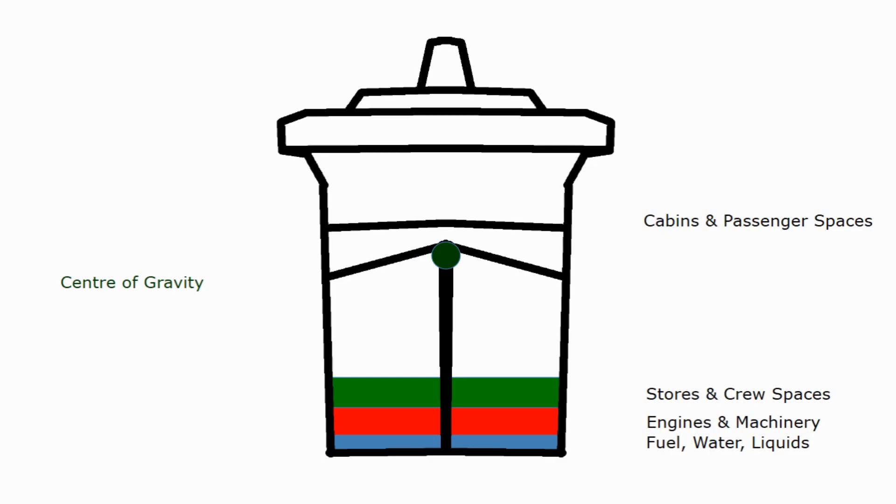Looking at the picture however we can see the engines, machinery, fuel, stores, all that sort of thing weighs an awful lot more than the cabins and passenger spaces, stuff like theatres which are mainly just air. This has the effect of dragging the centre of gravity downwards. So we know the centre of gravity will be towards the bottom half of the ship.